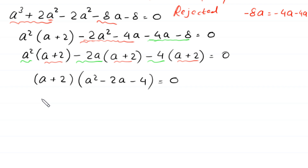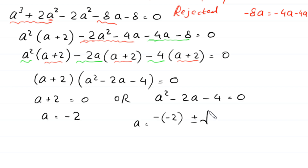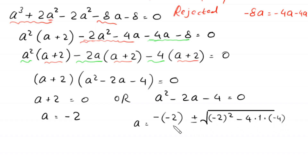From here, either a+2 equals 0, giving a equals negative 2, or a² minus 2a minus 4 equals 0. Since the quadratic is not factorable, we apply the quadratic formula: a equals negative(negative 2) plus or minus square root of (negative 2)² minus 4(1)(negative 4), all divided by 2(1).